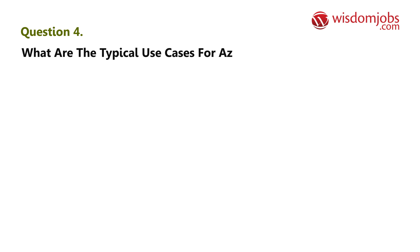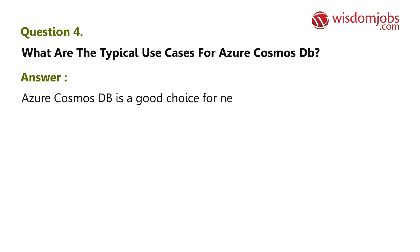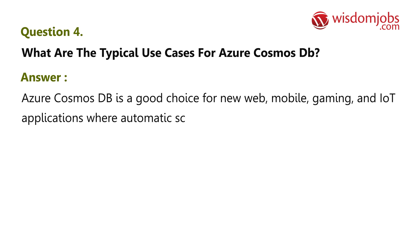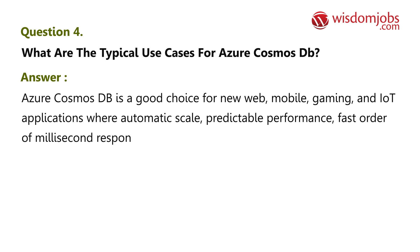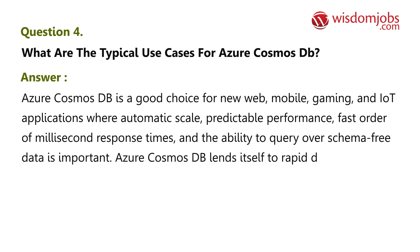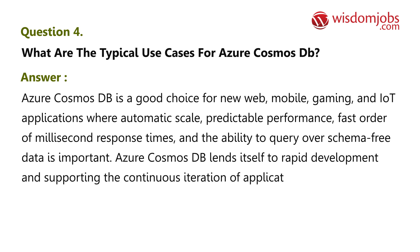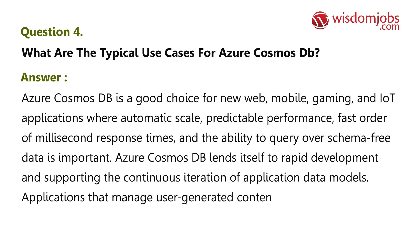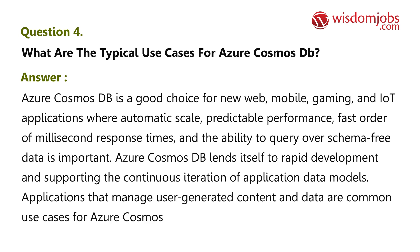Question 4: What are the typical use cases for Azure Cosmos DB? Answer: Azure Cosmos DB is a good choice for new web, mobile, gaming, and IoT applications where automatic scale, predictable performance, fast millisecond response times, and the ability to query over schema-free data are important. Azure Cosmos DB lends itself to rapid development and supporting continuous iteration of application data models. Applications that manage user-generated content and data are common use cases.